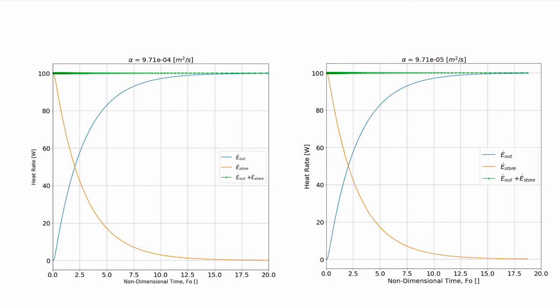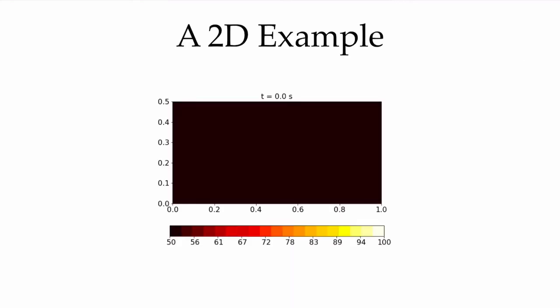Now briefly looking at a two-dimensional example — the same one used in the graphical method video. It's a two-dimensional slab of material with an aspect ratio of 2. There's a temperature of 100 degrees on the top half of the top surface and 50 degrees on the bottom surface; both sides are insulated. We start with an initial condition where the entire bar is at 50 degrees and immediately apply the 100-degree boundary condition.